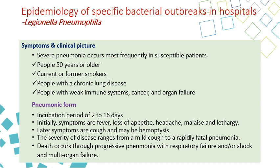Symptoms for severe pneumonia especially occur in older patients above 50 years, current or former smokers with chronic lung disease like COPD or asthma, and people with weak immune systems like HIV or cancer. There are two forms: pneumonic and non-pneumonic. The pneumonic form has an incubation period of 2 to 16 days, initially starting with fever, loss of appetite, headache, malaise, and lethargy, then respiratory symptoms like cough and sometimes hemoptysis. Severity ranges from mild to rapidly fatal pneumonia, with mortality due to multi-organ failure.